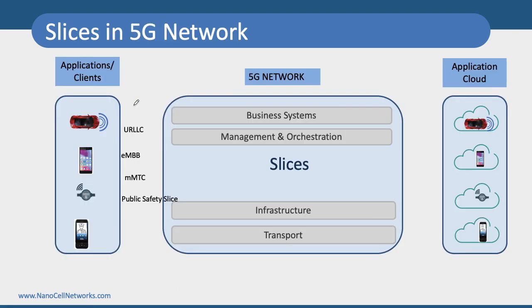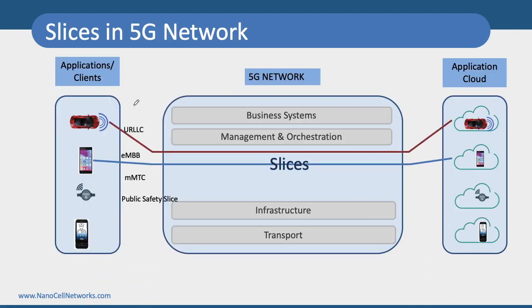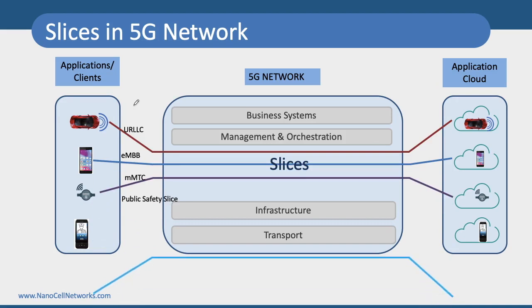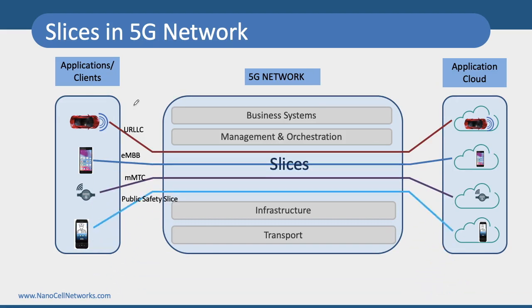To achieve all these things, we implement something called slicing, where all service verticals can be separated by virtual networks implemented over the same physical network. This concept is called network slicing in 5G. All service verticals are defined as slices, and every slice is isolated from the others, with end-to-end dedicated resources available for each particular slice or service vertical.